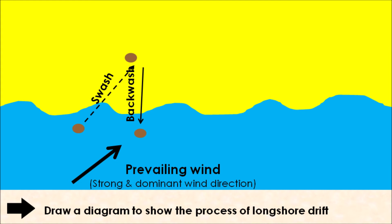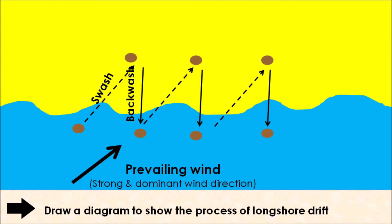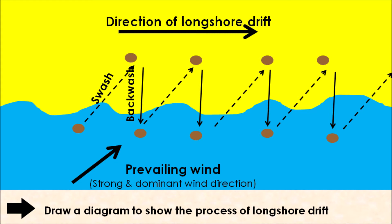Over time, this process is repeated through swash and backwash, swash and backwash, and over time you will be able to see the direction of longshore drift — the movement of sediment from one location on the coastline all the way down the beach to another new location. That is our overall direction of longshore drift.